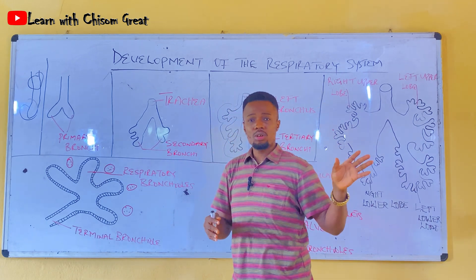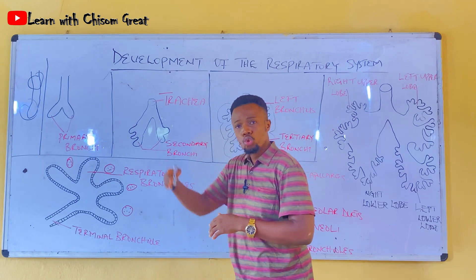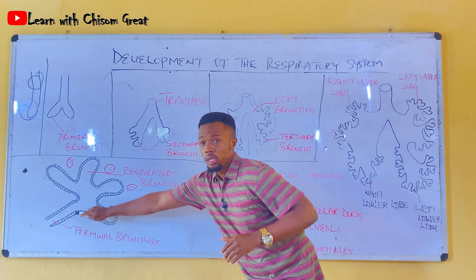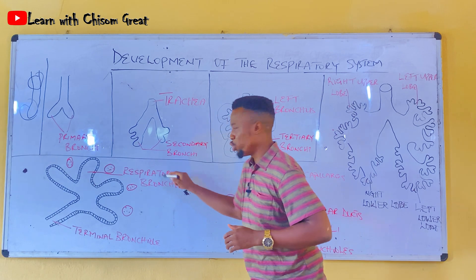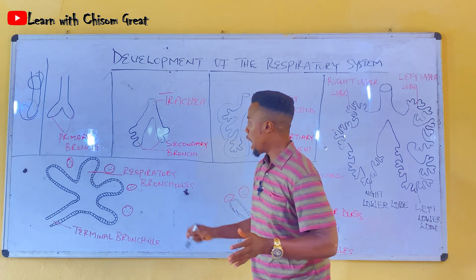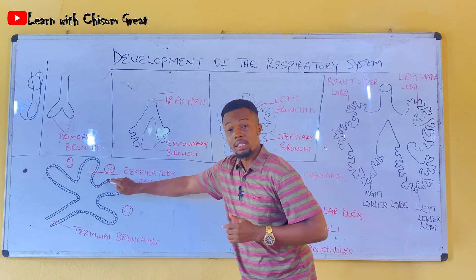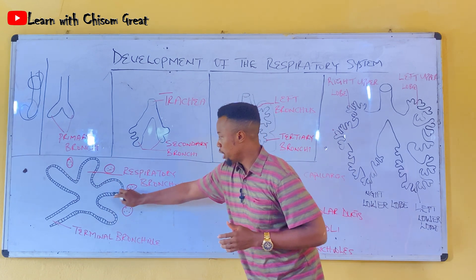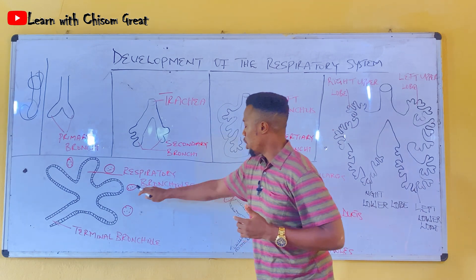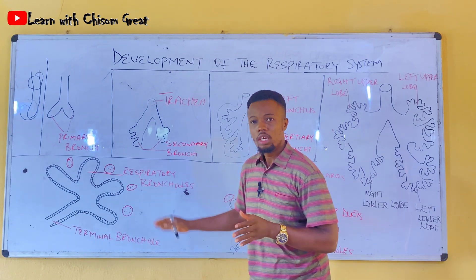Coming to the canalicular stage: the terminal bronchioles further divide into two or more respiratory bronchioles. This happens from week 16 to week 26 of fetal life. The cells lining the respiratory bronchioles are also cuboidal in shape. At this stage, the respiratory bronchioles are not yet functional.